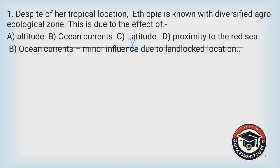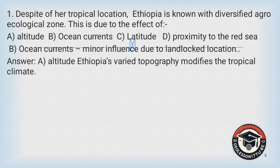Ethiopia is a landlocked country, so ocean currents have minor influence on its climate — B is not the correct answer. Altitude is the correct answer because Ethiopia's varied topography modifies its tropical climate. Ethiopia is known as the 'roof of East Africa' due to its highlands, which modify the tropical climate. Therefore, A is the correct answer.